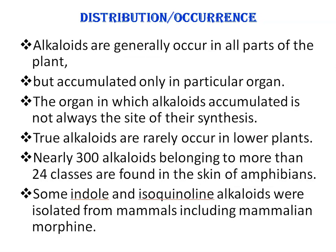Alkaloids are generally occurring in all parts of the plant, but accumulated only in a particular organ. The organ in which alkaloids accumulate is not always the site of their synthesis. For example, the edible tubers of the potato plant are devoid of alkaloids, whereas the green parts contain the poisonous alkaloid known as solanine. Similarly, in tobacco plants, nicotine is produced in the roots and translocated to the leaves where it accumulates. True alkaloids rarely occur in lower plants. Nearly 300 alkaloids belonging to more than 24 classes are found in the skin of amphibians. Some indole and isoquinoline alkaloids were isolated from mammals, including mammalian morphine.